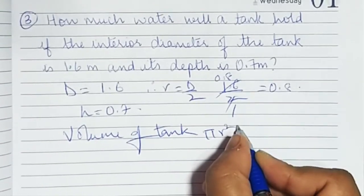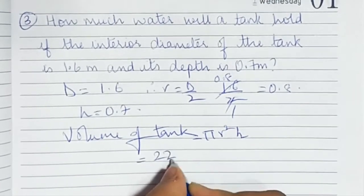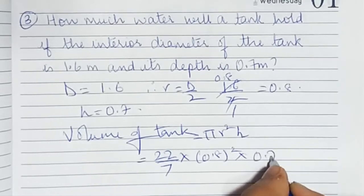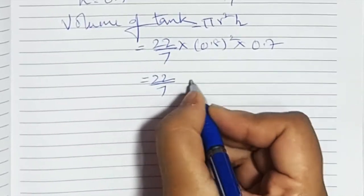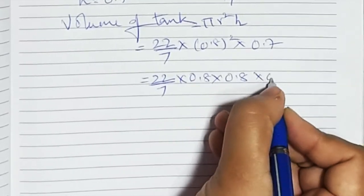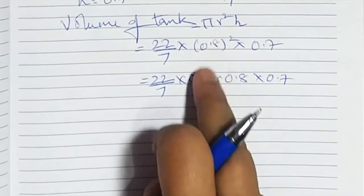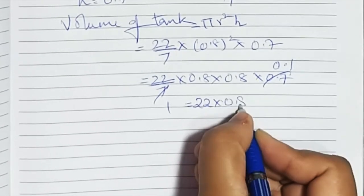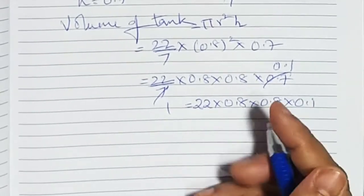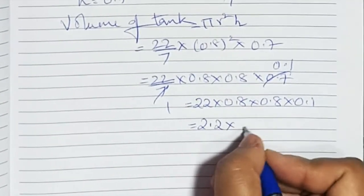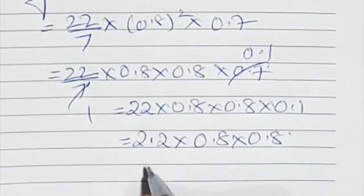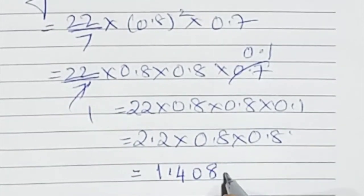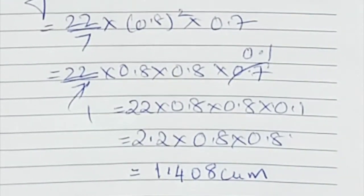Volume of tank equals pi r squared h. Pi is 22 upon 7, r squared means 0.8 squared, and h is 0.7. So, 22 upon 7 into 0.8 into 0.8 into 0.7. Simplifying, 0.7 upon 7 gives 0.1, so we get 22 into 0.8 into 0.8 into 0.1. That gives 2.2 into 0.8 into 0.8, and the final answer is 1.408 cubic meters.